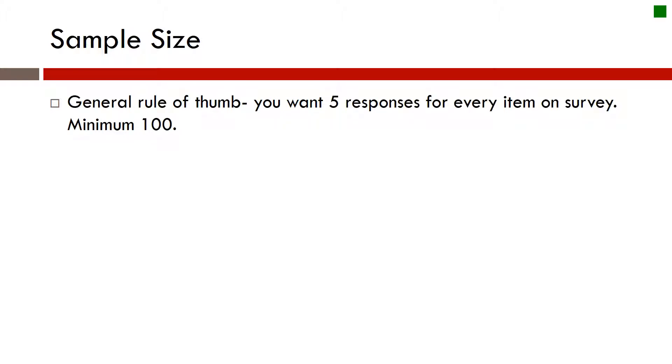There's going to be two different methods that we'll mention. One would be the rule of thumb that we use where we have five responses for every item on our instrument that we're using to collect data. So if you have 30 items, and even if you're doing multiple treatments, you need to treat each item for each treatment.